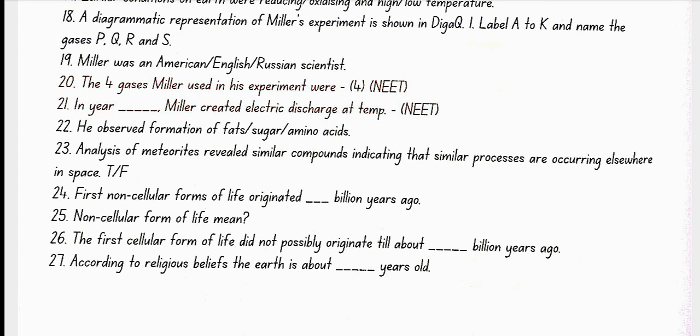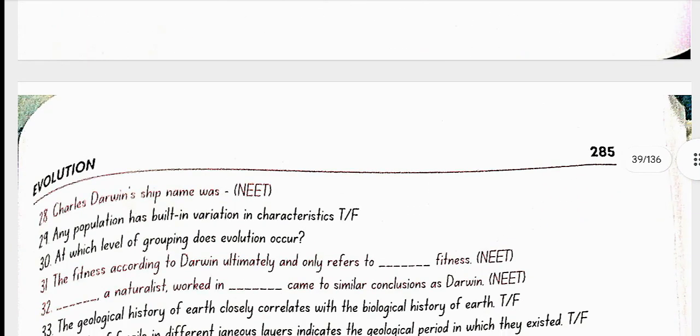First non-cellular forms of life originated 3 billion years ago. Non-cellular form of life mean the giant molecules like RNA, protein, polysaccharide. The first cellular form of life did not possibly originate till about 2 billion years ago. According to religious beliefs, the earth is about 4,000 years old, which is not possible.